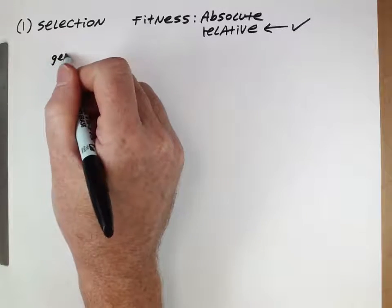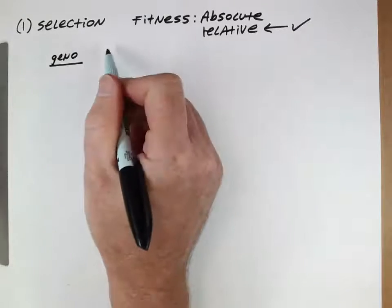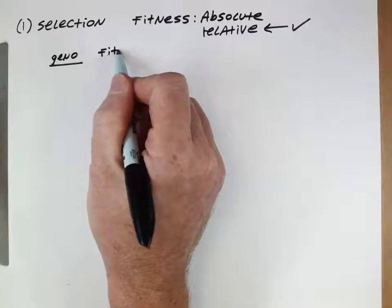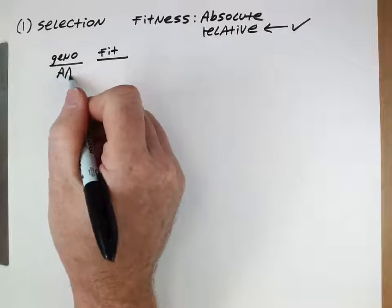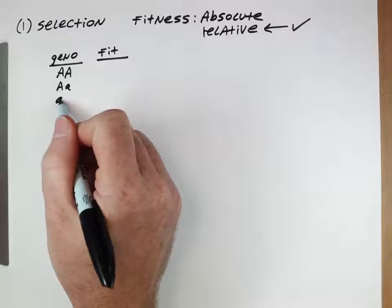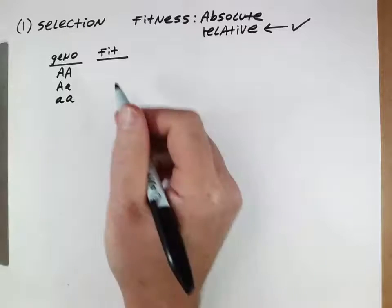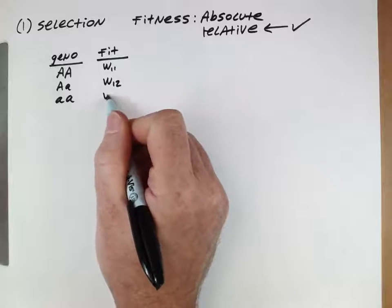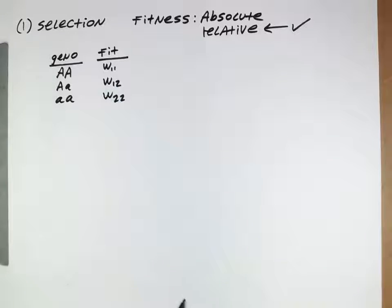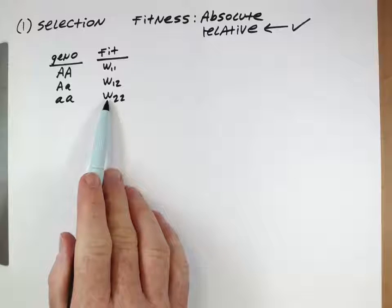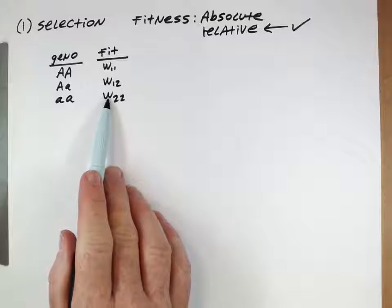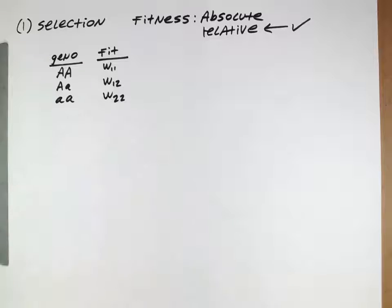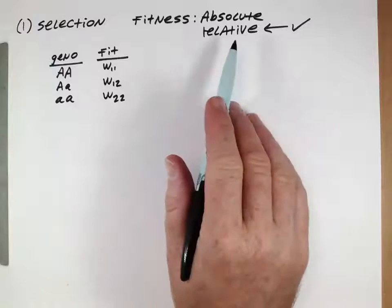Let's think about genotypes and their fitnesses. There are three genotypes we're considering, and we represent their fitnesses as W11, W12, and W22. W is used for fitness because F is used for other things — W comes from Sewell Wright and is the standard symbol for fitness.